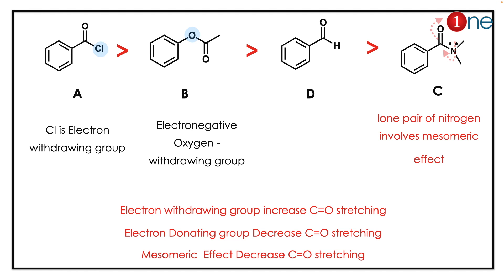Looking at option A — it has chlorine, which is an electron withdrawing group, so it has the highest stretching frequency. Then comes the ester oxygen. The ester oxygen is electron withdrawing because it won't donate its lone pair due to its high electronegativity.